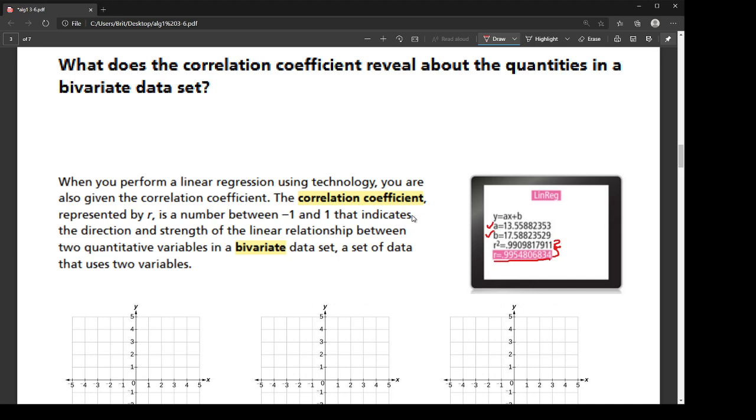And what it does is it describes the direction and the strength of a linear relationship between two variables. I'm going to show you on some graphs what that means. Now, when we talk about a bivariate data set, bi just means two. Variate means variables. So if they talk about a bivariate data set, they're talking about a set of data that has two variables, usually x and y. Alright, so let's talk about this correlation coefficient a little bit more.